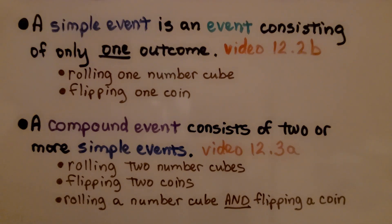A compound event consists of two or more simple events. We first learned about that in video 12.3a. Examples include rolling two number cubes, flipping two coins, or rolling a number cube and flipping a coin.